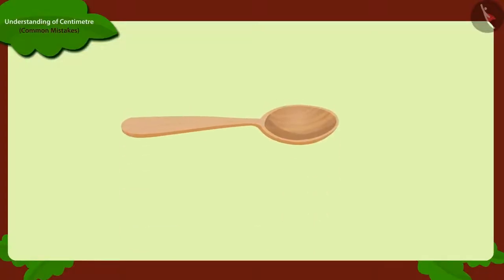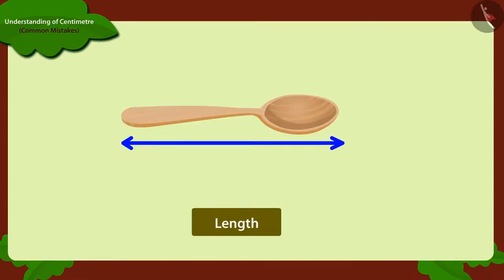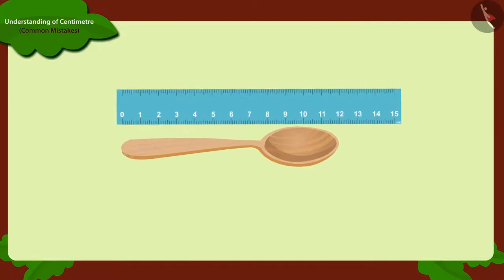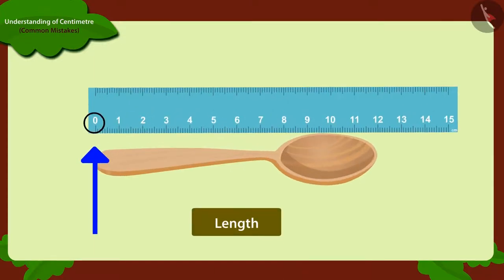Keep in mind, kids, whenever we are measuring the length of any object with a ruler, then we should always keep in mind that we start measuring the length by the 0 number.